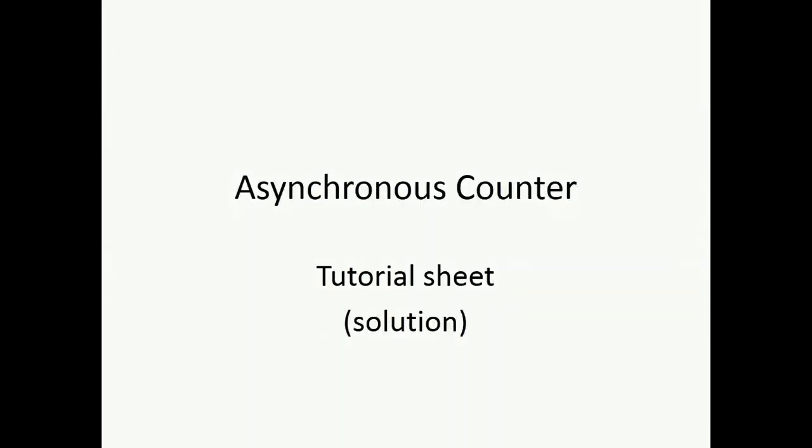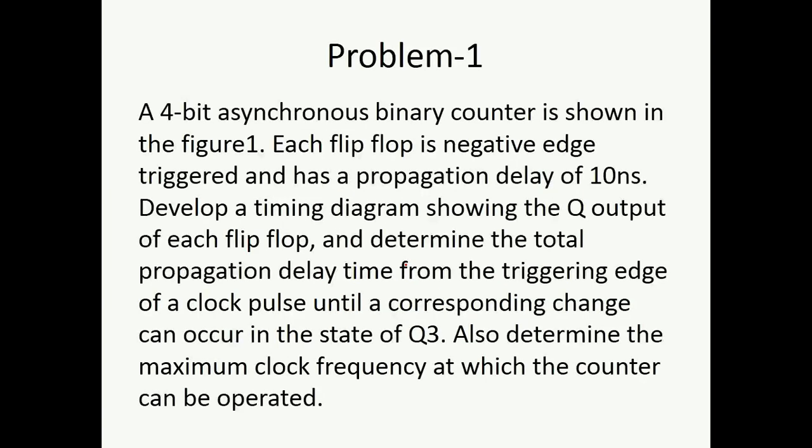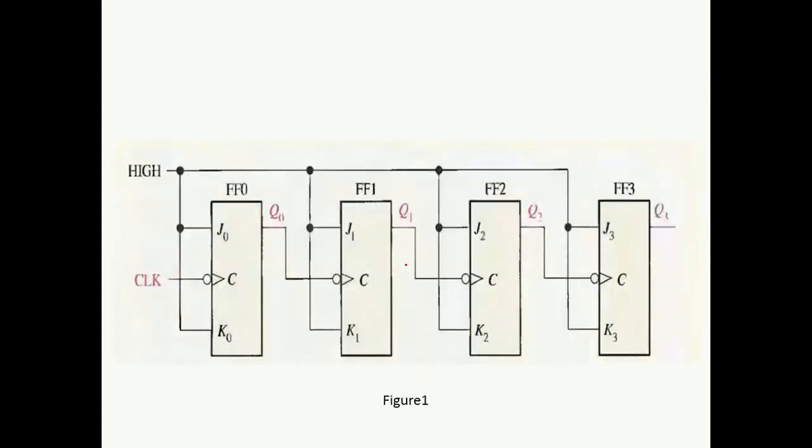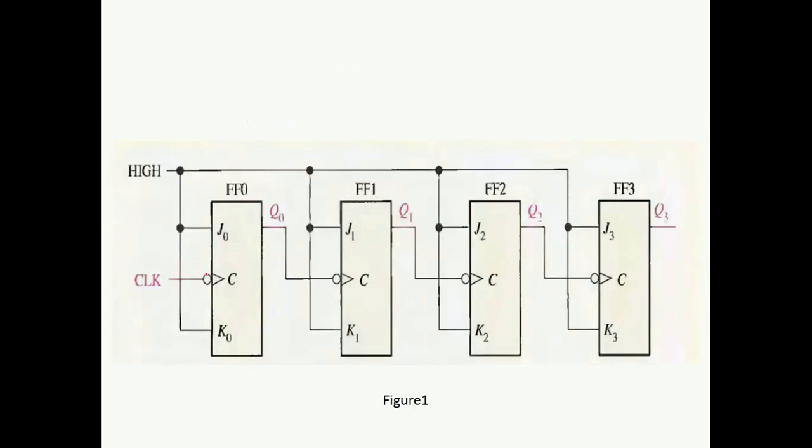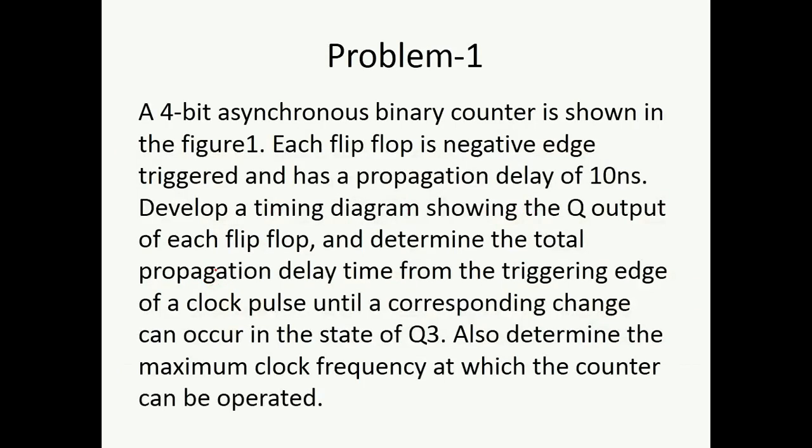I'm going to talk about the solutions of the tutorial sheet for asynchronous counters. I'll start with problem number 1, which is a 4-bit asynchronous binary counter. As you can see in this diagram, four flip-flops are there. Each flip-flop is negative edge triggered, with a propagation delay of 10 nanoseconds. We have to develop a timing diagram showing the Q output of each flip-flop and determine the total propagation delay time from the triggering edge of a clock pulse until a corresponding change can occur in the state of Q3, and calculate the maximum clock frequency.